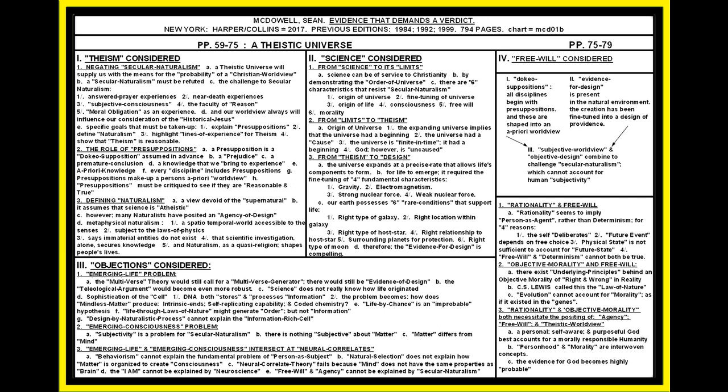Number two, the emerging consciousness problem. Subjectivity itself is a problem for secular naturalism. There is nothing subjective about matter. Matter differs from mind. That's a self-evident axiom. Note three, emerging life and emerging consciousness intersect at neural correlate theory. Behaviorism cannot explain the fundamental problem of person as a subject. Natural selection does not explain how matter is organized to create human consciousness. Human consciousness and the neural correlate theory fails because mind does not have the same properties as brain. The I am cannot be explained by neuroscience. Human subjectivity cannot be explained by neuroscience. Free will and agency cannot be explained by secular naturalism, period. So McDowell tells us that the biggest weakness in secular naturalism is the fact that subjectivity exists, morality exists, human consciousness exists.